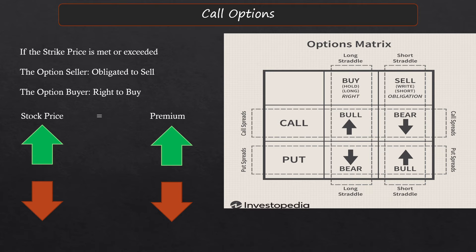If the stock price goes up, the premium goes up. If the stock price goes down, the premium goes down. The option contract is pegged to the price but leveraged because of the opportunity cost and exchange over time.